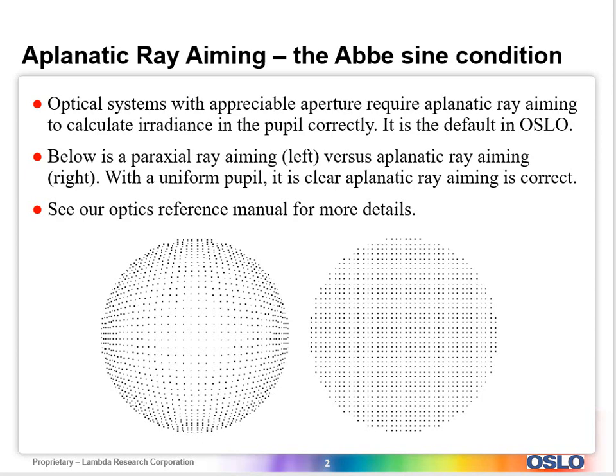So this is the default, which ends up being aplanatic ray aiming, and the reason is covered in our optics reference manual and there's a couple of pictures shown there.